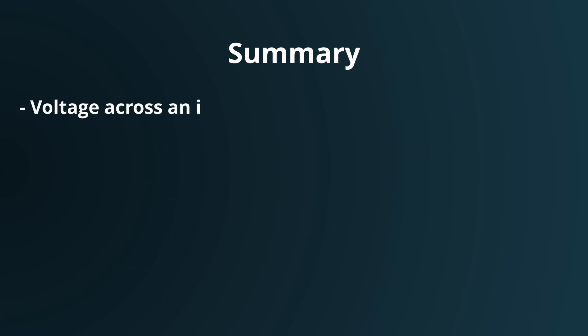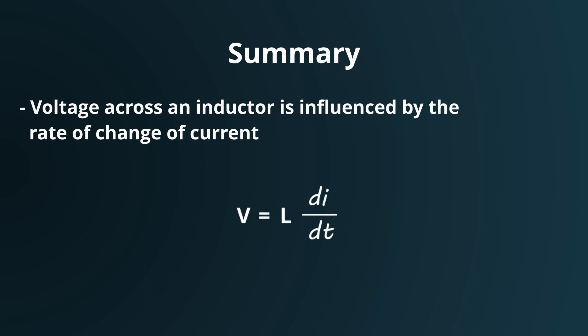In conclusion, the voltage across the inductor is directly influenced by how the current through it changes over time. If the current remains constant, there's no voltage across it, but the moment the current starts to change whether it's increasing or decreasing, the inductor responds by inducing a voltage to counteract that change.